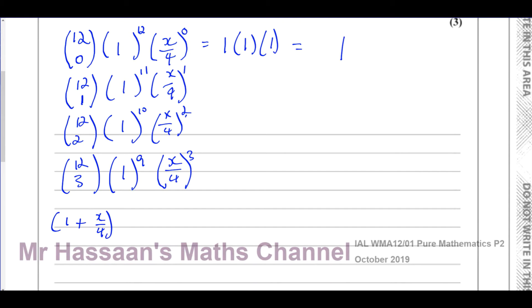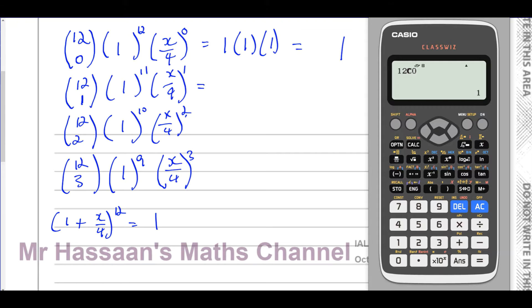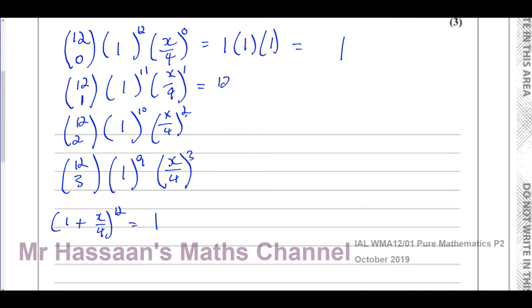For the second term, 12C1 gives us 12. Then 1 to the power of anything is 1, and x/4 to the power of 1 is x/4. So 12 times x/4 simplifies: 4 and 12 cancel to give 3, leaving us with 3x as the second term.